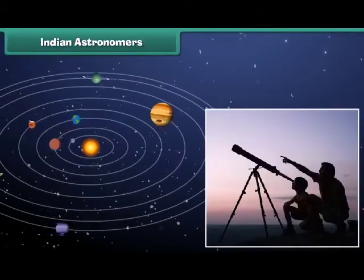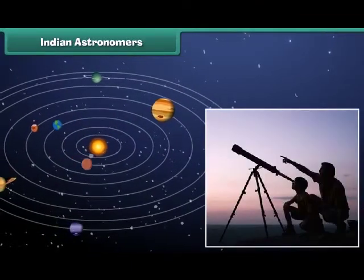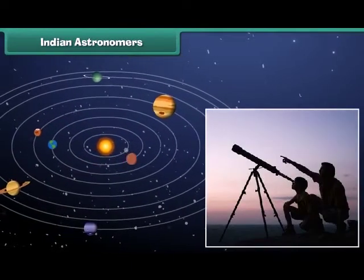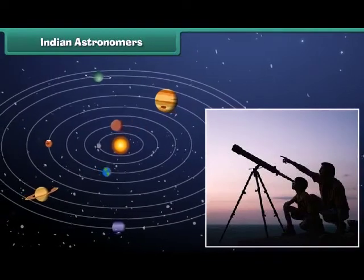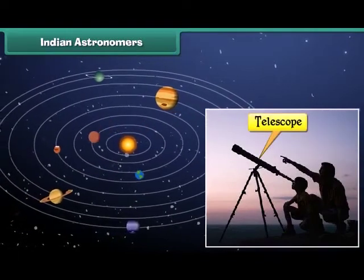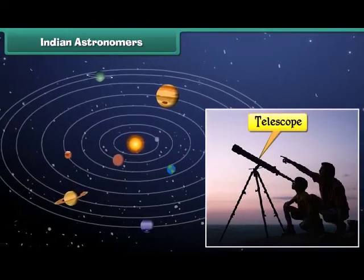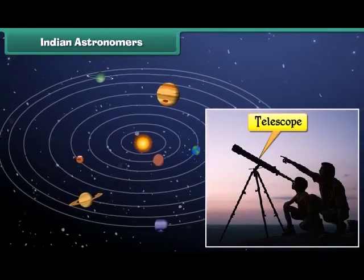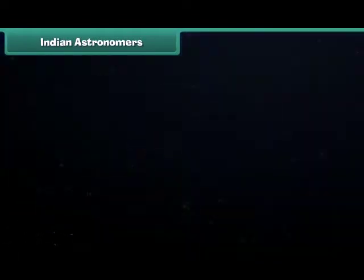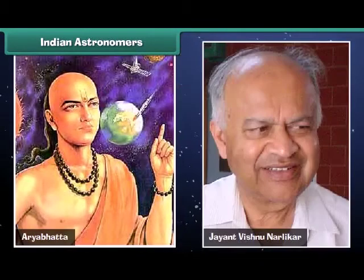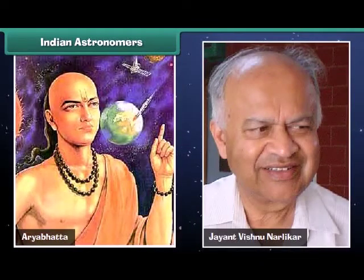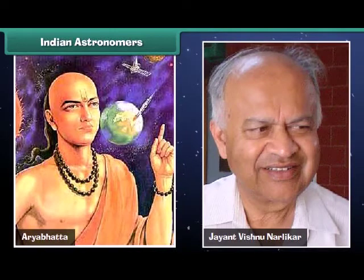An astronomer is a person who studies stars and planets. He uses a telescope for his study. Bhaskaracharya, Aryabhatta and Jayant Vishnu Narlikar are some well-known Indian astronomers.